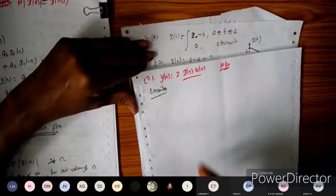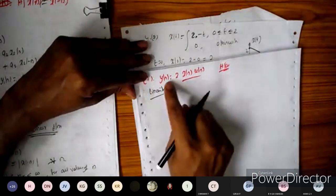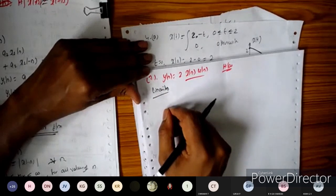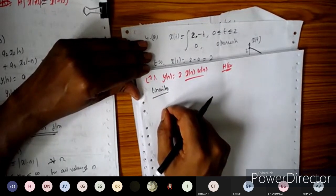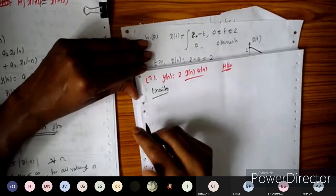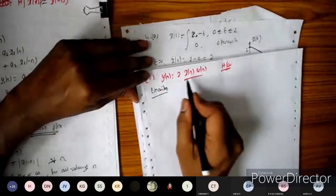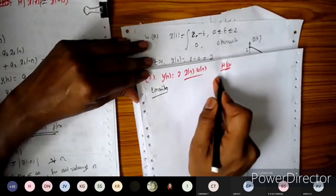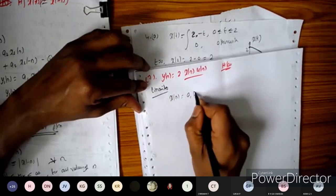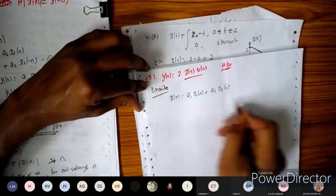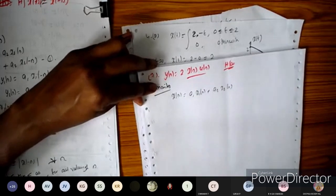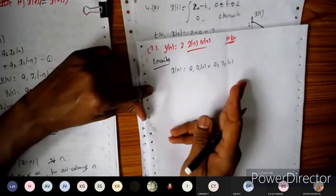In the last class I gave the problem y[n] = 2 · x[n] · u[n]. To verify the linearity property, as usual, let x[n] = a1·x1[n] + a2·x2[n]. Then y[n] = 2·(a1·x1[n] + a2·x2[n])·u[n] = 2·a1·x1[n]·u[n] + 2·a2·x2[n]·u[n]. Call this equation 1.